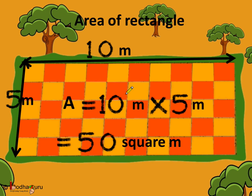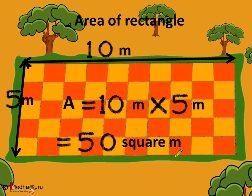So, what can we say about the area? We can say the area of a rectangle is length multiplied by the width, and they both should be in the same unit. And by multiplying, we get the area as square units. Here, the unit is meter, so we got the area as 50 square meters.